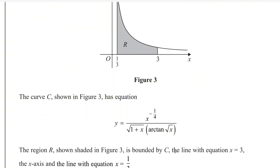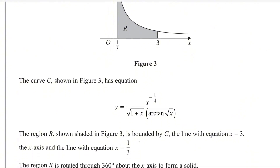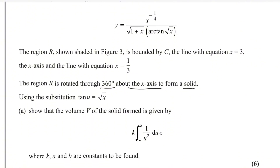The curve C shown in figure 3 has equation y equals x to the power minus 1 over 4 divided by 1 plus square root of x, multiplied by tan inverse square root of x. The region R shown shaded in figure 3 is bounded by C, the line x equals 3, the x-axis, and the line x equals 1 over 3. The region R is rotated through 360 degrees about the x-axis to form a solid. Using the substitution tan(u) equals square root of x, show that the volume of the solid is given by k times the integral from a to b of 1 over u squared du, where k, a, and b are constants to be found.